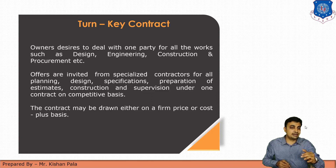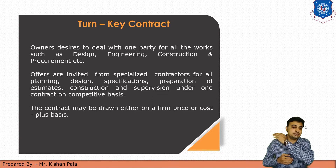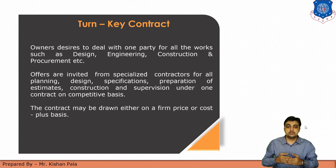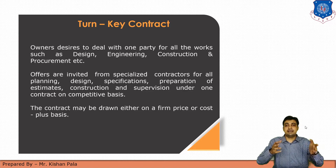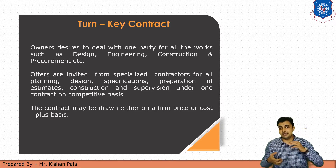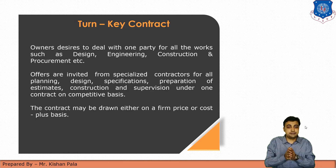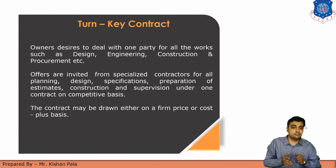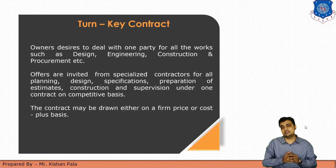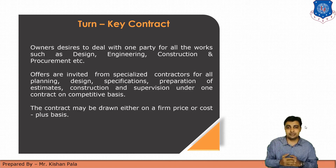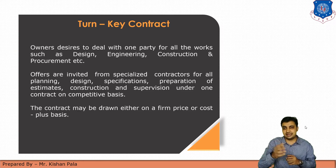In a turnkey contract, the scope includes planning, designing, specification preparation, estimation, construction, and supervision. All tasks are offered by the client and accepted by the contractor, and all specifications are agreed upon by both parties. The contract may be drawn either on a firm price or cost-plus basis, depending on the type of structure and circumstances.